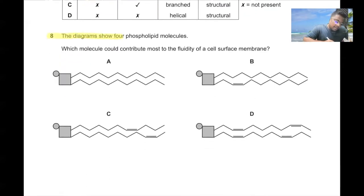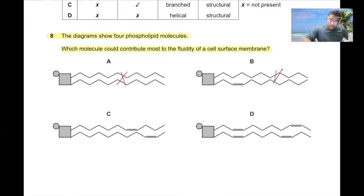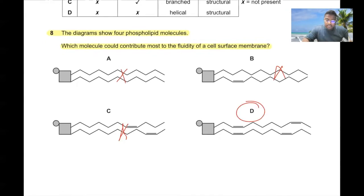Question number eight. The diagram shows four phospholipid molecules. Which molecule could contribute most to the fluidity of the cell surface membrane? The membrane will be more fluid with more carbon-carbon double bonds. A, B, and C are wrong. D is the correct answer because it contains the most carbon-carbon double bonds.